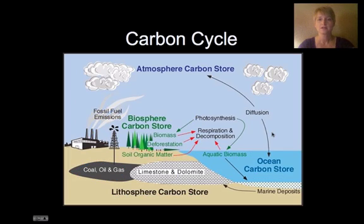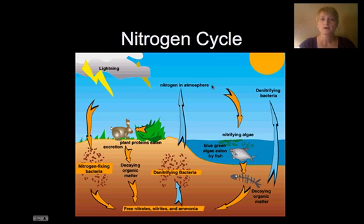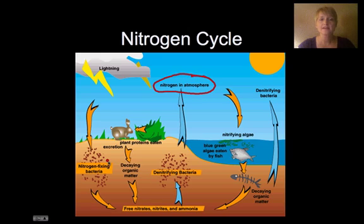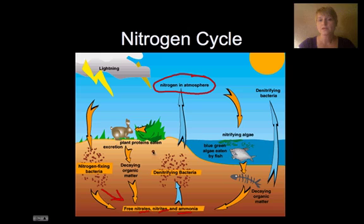We have nitrogen in the atmosphere, and we have some nitrogen-fixing bacteria in the soils that convert that nitrogen into free nitrates, nitrites, and ammonia. The plants then take up the nitrogen and are eaten by animals.